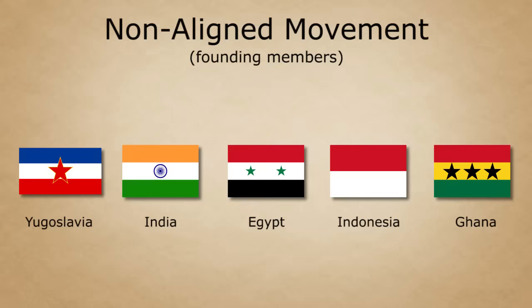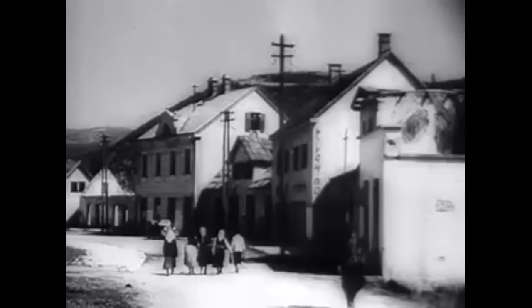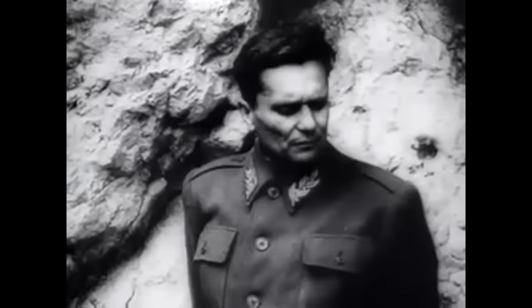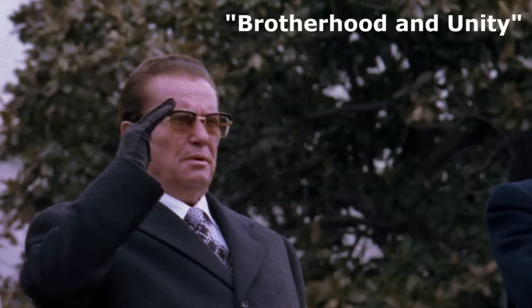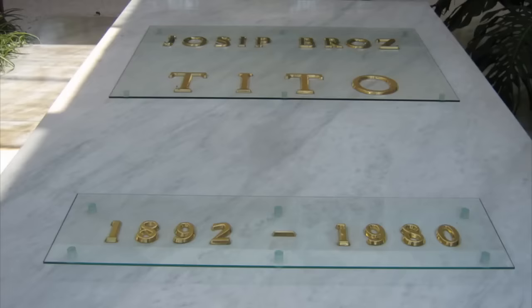Throughout Yugoslavia's existence, there had always been ethnic tensions between the various ethnic groups. This would ultimately lead to the country's collapse, but under the rule of their first president, Josip Broz Tito, these tensions were largely kept under control, as he promoted brotherhood and unity between the six republics, and always tried to suppress nationalism, sometimes by force. The death of Tito in 1980 is often viewed as the beginning of the end of Yugoslavia.